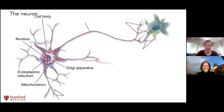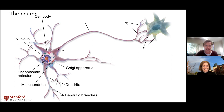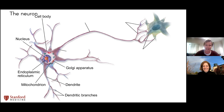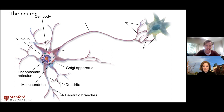What makes neurons different from other cell types? These little extending branches off the cell body are called dendrites, and the finer processes are called dendritic branches — sometimes called arborizations because they look like little tree limbs. These structures are responsible for reaching out to other neurons nearby and receiving information.